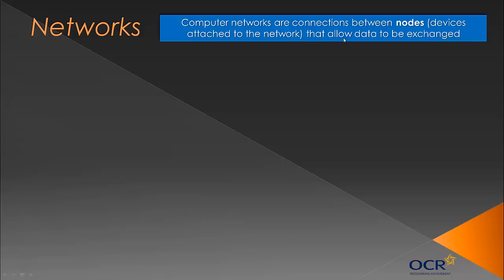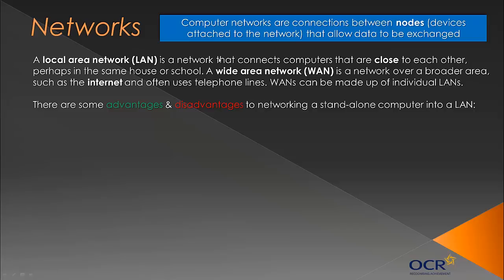We're going to look at two types of networks. A local area network, or LAN, is a network that connects computers that are close to each other. It's a loose definition — it doesn't matter whether it's 10 or 20 metres. A LAN is just a smaller network; it could be a house or a school.